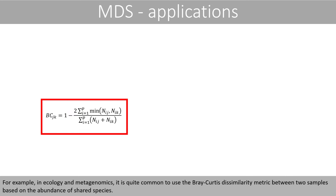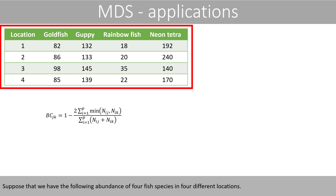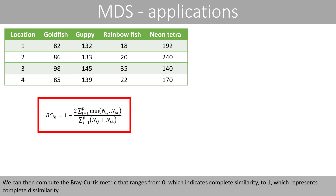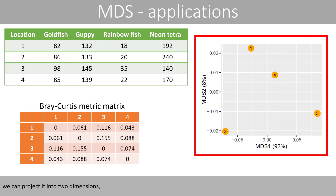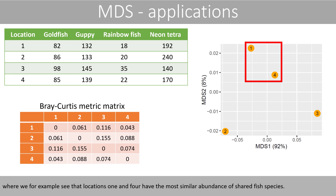For example, in ecology and metagenomics, it is quite common to use the Bray-Curtis dissimilarity metric between two samples based on the abundance of shared species. Suppose that we have the farming abundance of four fish species in four different locations. We can then compute the Bray-Curtis metric that ranges from zero, which indicates complete similarity, to one, which represents complete dissimilarity. If we compute the matrix based on this metric, we can project it into two dimensions, where we see that locations one and four have the most similar abundance of shared fish species.